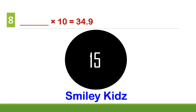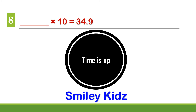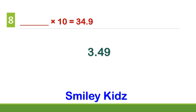Question number 8. Dash multiplied by 10 is equal to 34.9. Your time starts now. Your time is up. The correct answer is 3.49. 3.49 multiplied by 10 is equal to 34.9.